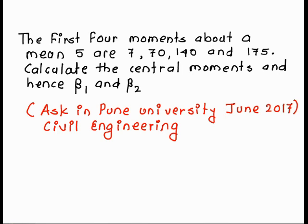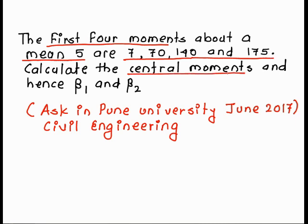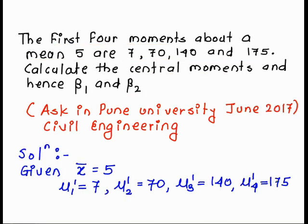First of all we identify the given values. The mean x-bar is equal to 5, and the first four raw moments are: mu 1 dash is equal to 7, mu 2 dash is equal to 70, mu 3 dash is equal to 140, and mu 4 dash is equal to 175. We want to calculate the central moments and beta 1 and beta 2.